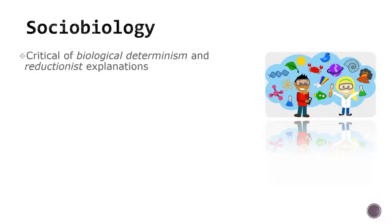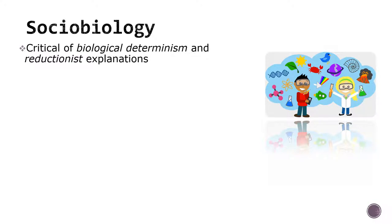Sociobiology. Sociologists have considered a relationship between biology and sociology almost since Auguste Comte. Some sociologists who believe that there is a strong connection between nature and nurture created a sub-discipline called sociobiology. Most sociologists regard sociobiology critically, pointing out that the sub-discipline tends to be deterministic and reductionistic.